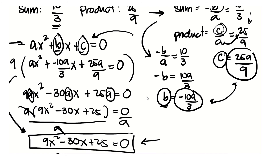When you factor out a, divide both sides by a, and that's how we obtain 9x squared minus 30x plus 25 equal to 0. As mentioned, it's just one of the many possible answers for this problem, given the sum and product only as the information we have.